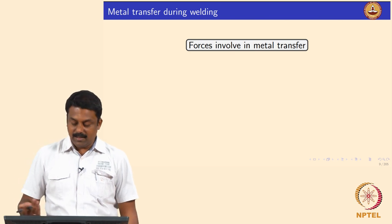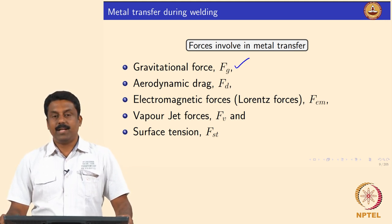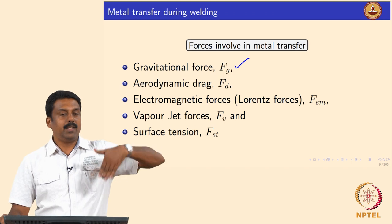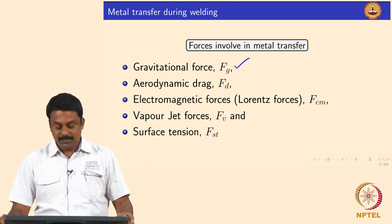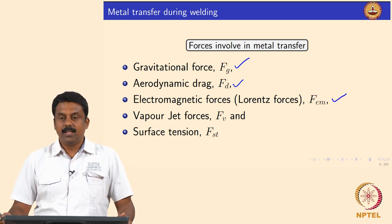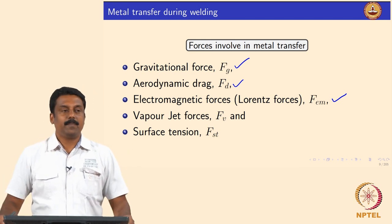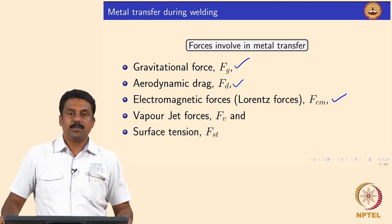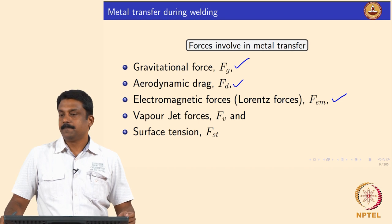The forces in metal transfer are: gravitational force determined by the angle cos theta — whether you are doing downhand or uphand welding. If you are doing downhand it always assists. Then you have plasma jet or aerodynamic drag force Fd, and then electromagnetic Lorentz force. In most cases the Lorentz force always assists because creating a narrow arc is very difficult.